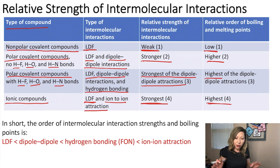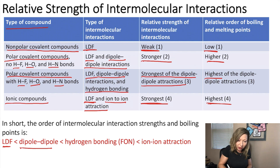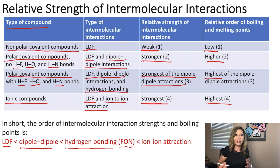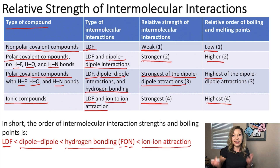In short, to summarize: London dispersion forces are the weakest, then dipole-dipole interactions, then hydrogen bonding — where we have HF, HO, and HN bonds, so hydrogen just wants to have fun — and then ion-ion attractions are the strongest.